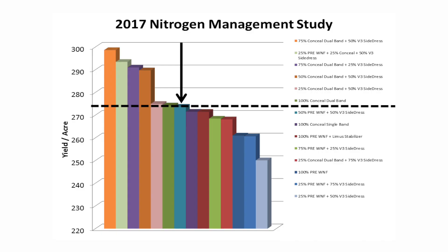All right, let's take a look at the data. Here's a data graph where I've tabulated all the different yields with the various nitrogen programs I implemented this past spring. Notice my preferred method of application is right in the middle of the graph — it's represented by the blue bar. This tells me that I was just average, just kind of middle of the pack. Sure, I beat about half the programs I tested, but I also got crushed by half of them as well.